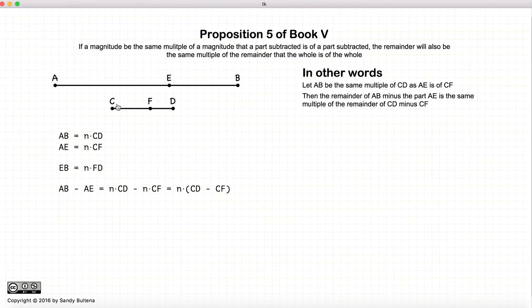This proposition states that if this is true, then the remainder of AB minus AE will be the same multiple as the others of the difference between CD and CF.